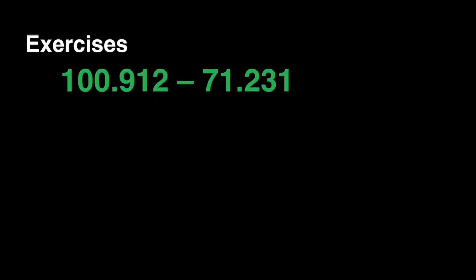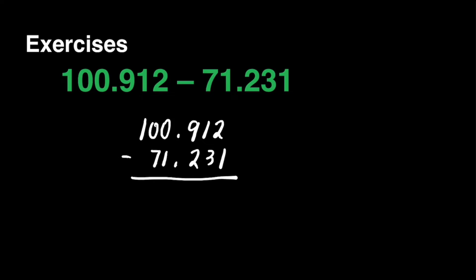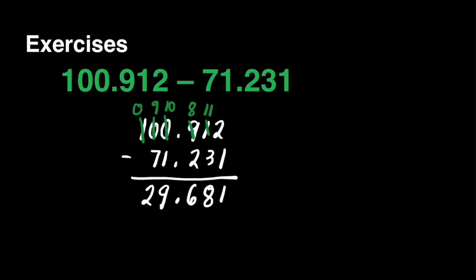Let's have the next one: 100 and 912 thousandths minus 71 and 231 thousandths. We have to align the decimal points, then we're ready to subtract. 2 minus 1 is equal to 1. 1 minus 3 cannot be, so we have to borrow from 9. This 1 will become 11, and 9 will become 8. 11 minus 3 is equal to 8. 8 minus 2 is equal to 6. Then of course, we have to copy the decimal point. 0 minus 1 cannot be, so we have to borrow. This 0 will become 10, this 0 will become 9, then 1 will become 0. 10 minus 1 is equal to 9. 9 minus 7 is equal to 2. Our final answer is 29 and 681 thousandths.